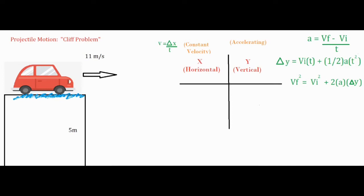In our first column, we're putting in all the values that are horizontal. Why do we want to put all horizontal values into one column? Because it's a different type of motion. As the car leaves at 11 meters per second horizontally, there are no more forces pushing or pulling left and right once it leaves the edge of the cliff. So inertia carries it along at a constant 11 meters per second from left to right — a constant velocity. We'll only use this formula on the left side of our columns.